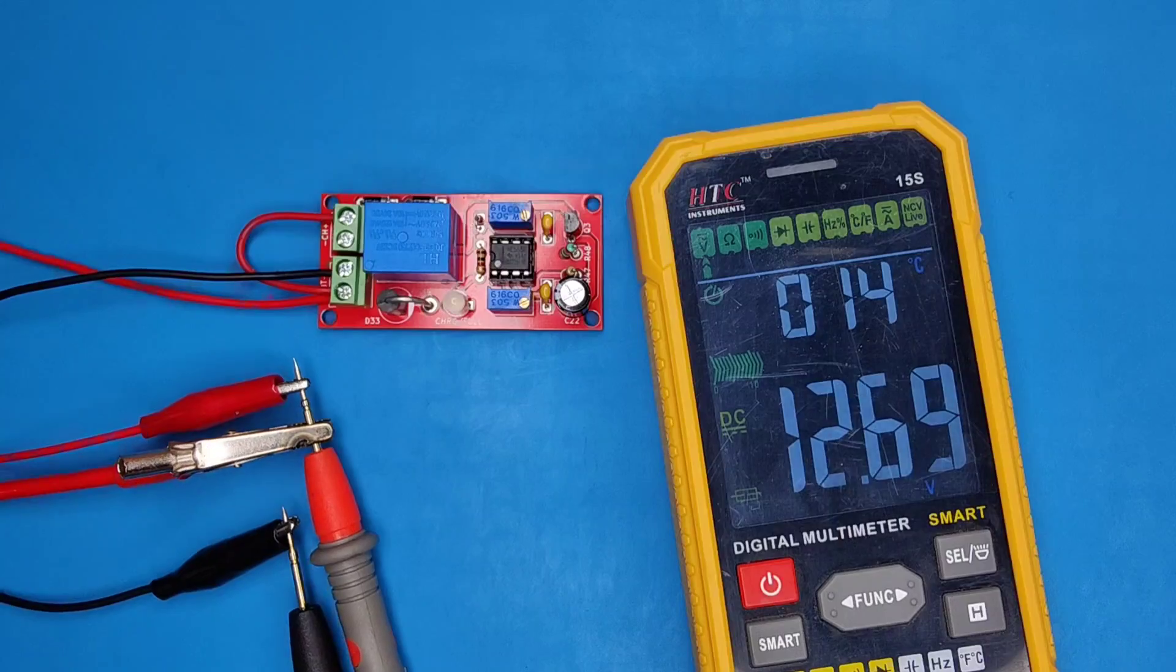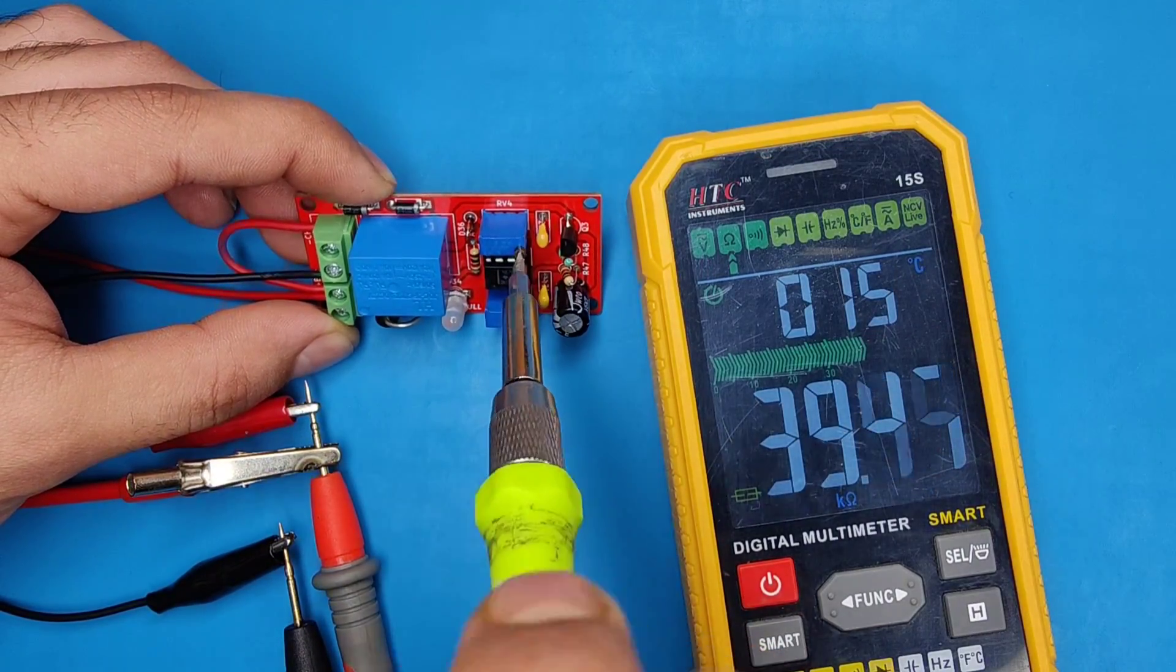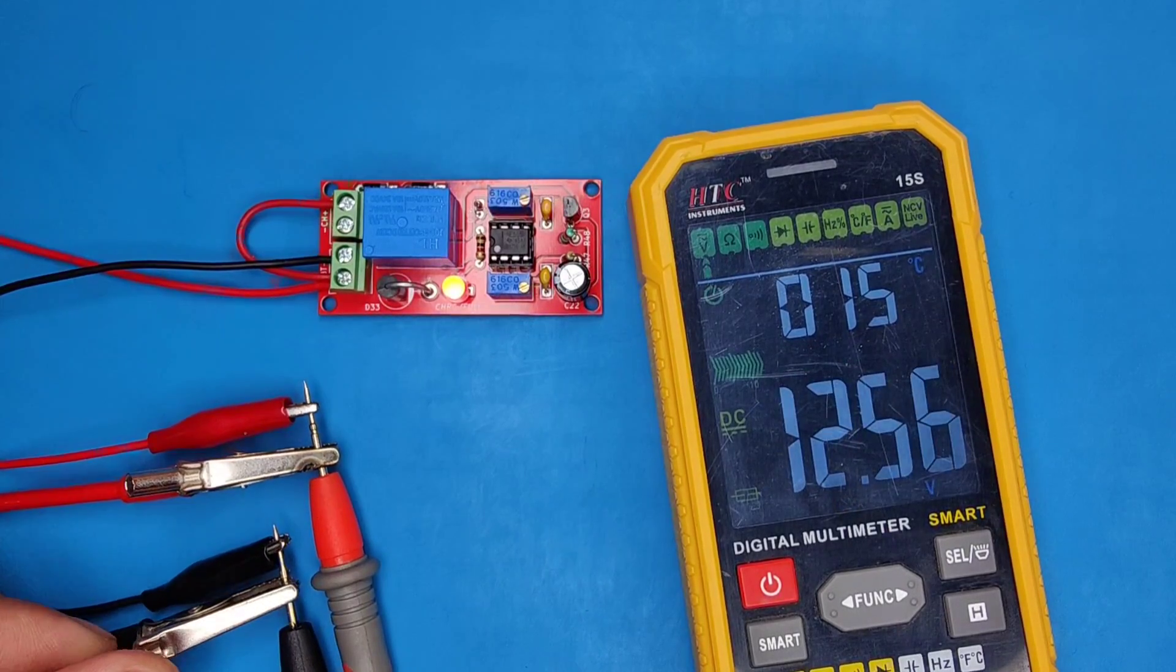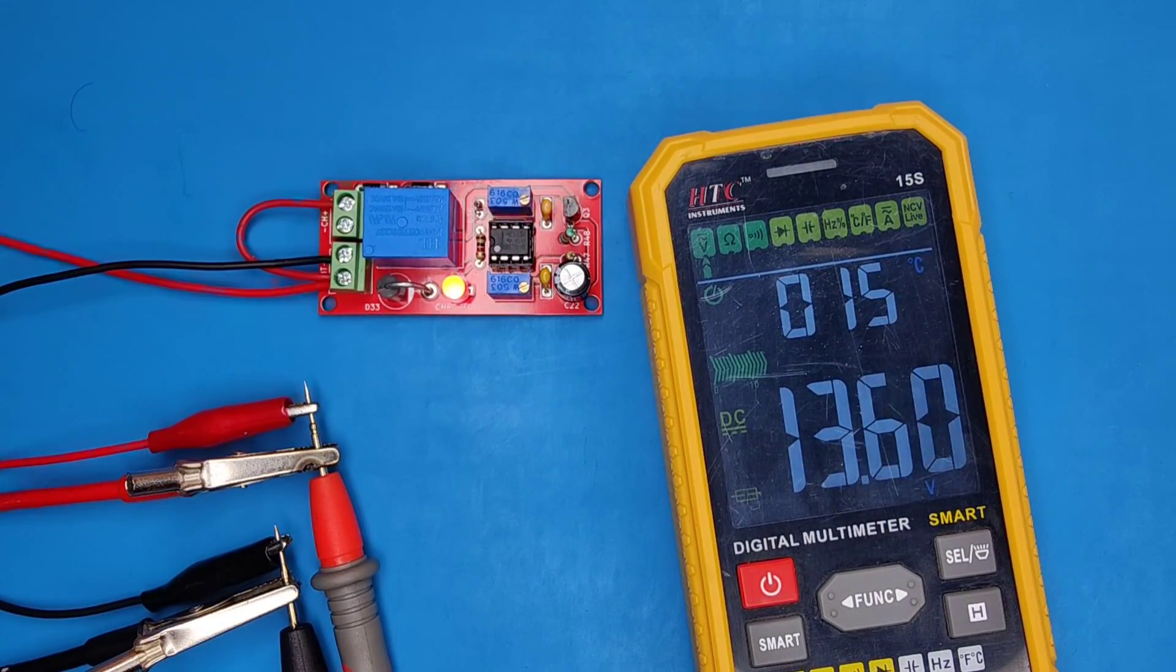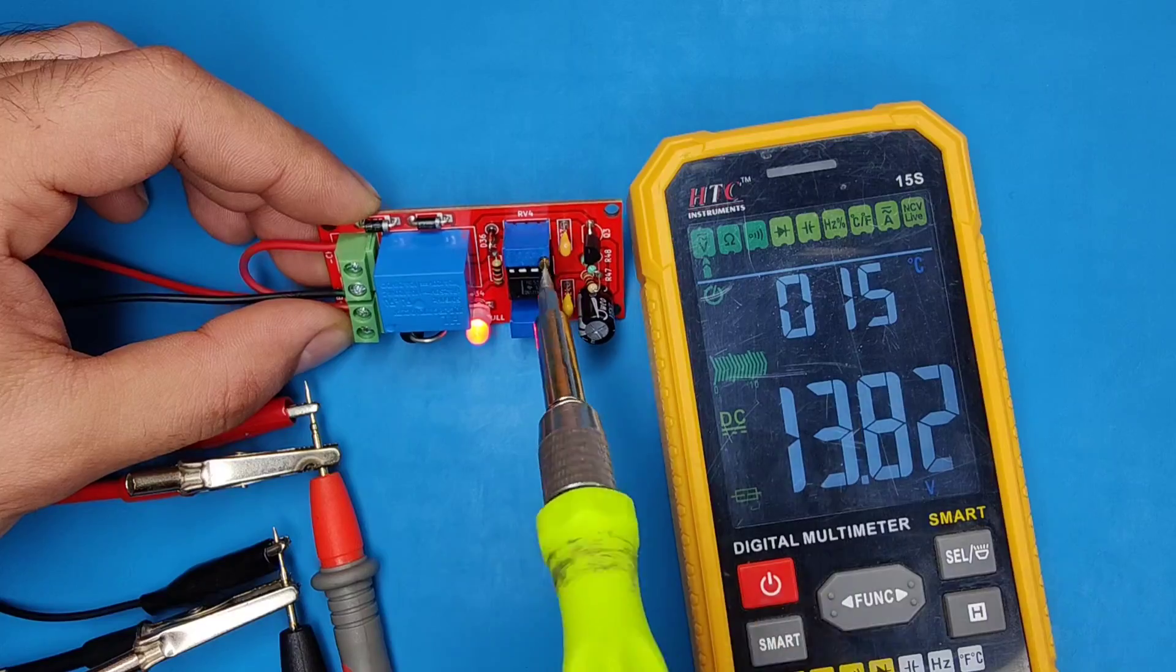Now disconnect the power supply and set the potentiometer to minimum. Connect the power supply and set cutoff voltage. I set it at 13.8 volts. Now slowly adjust the potentiometer clockwise till green LED turns on.